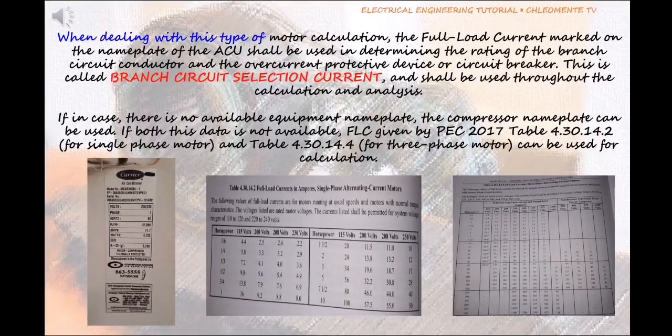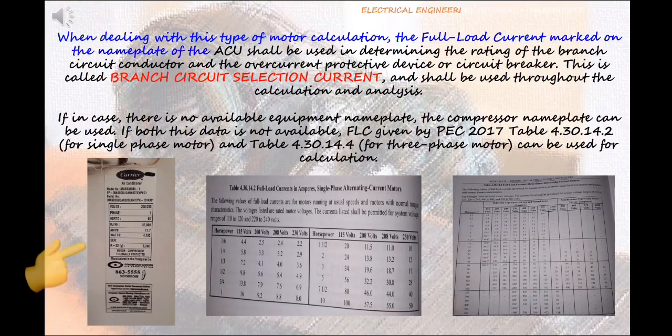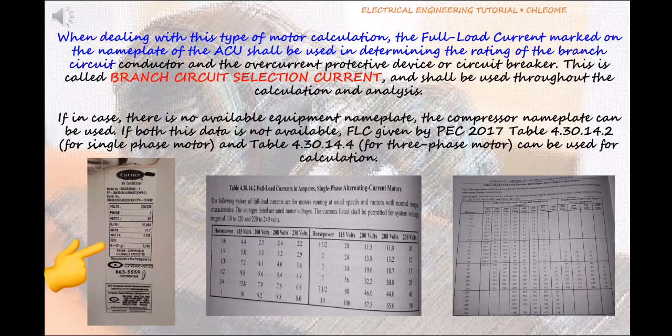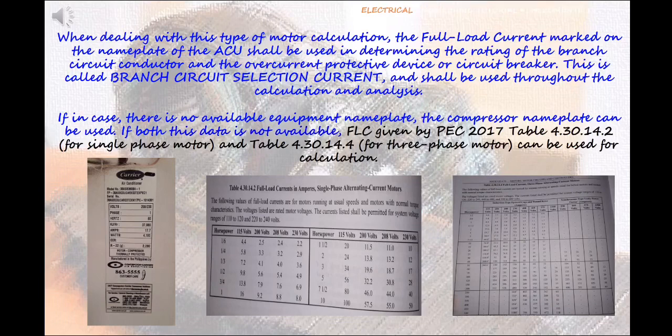When dealing with this type of motor calculation, the full load current marked on the nameplate of the ACU shall be used in determining the rating of the branch circuit conductor and the overcurrent protective device or circuit breaker. This is called branch circuit selection current and shall be used throughout the calculation and analysis. If there is no available equipment nameplate, the compressor nameplate can be used. If both this data is not available, FLC given by PEC 2017 Table 4.30.14.2 for single phase motor and Table 4.30.14.4 for three phase motor can be used for calculation.